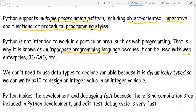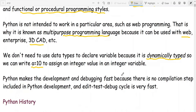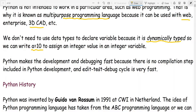It can be used with web, enterprise, 3D CAD, etc. It is dynamically typed, meaning we don't need to declare data types for variables. We can write a = 10 to assign an integer value. This makes development and debugging very fast because there is no compilation step — it is an interpreted language and the edit-test-debug cycle is very fast.